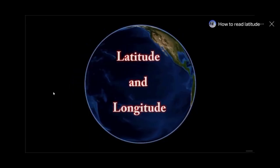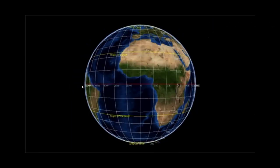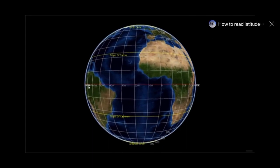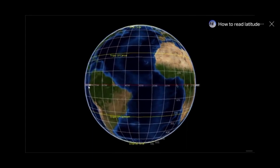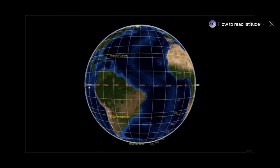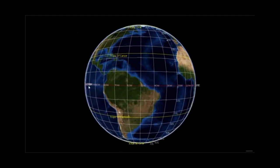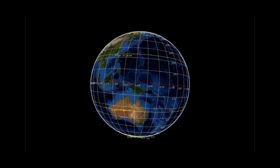Latitude is the distance of a place north or south of the Earth's equator or the celestial equator. Longitude is the distance of a place east or west of the prime meridian or standard meridian of the celestial object.